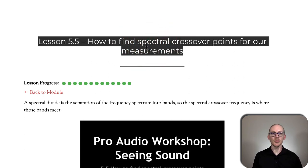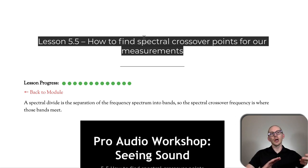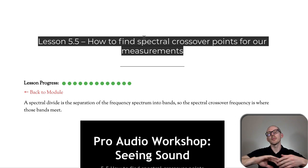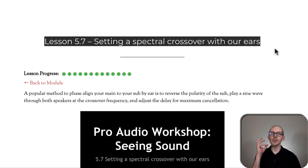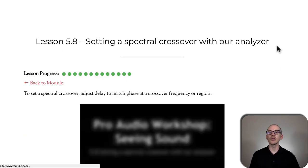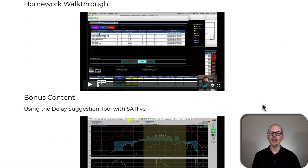Now we're going to get into the spectral crossover. First we need to decide what the spectral crossover point is going to be, and then from there we'll have our spectral crossover region — where one driver hands off coverage to the other. The main says, 'Sub, you take over from here.' Can we do the same thing with our ears? Can we listen to maybe a sine wave or a warble test tone and set the delay between our main and our subs just by listening? Then in the next lesson we do the same thing with our analyzer, with some extra content because this can get complicated.